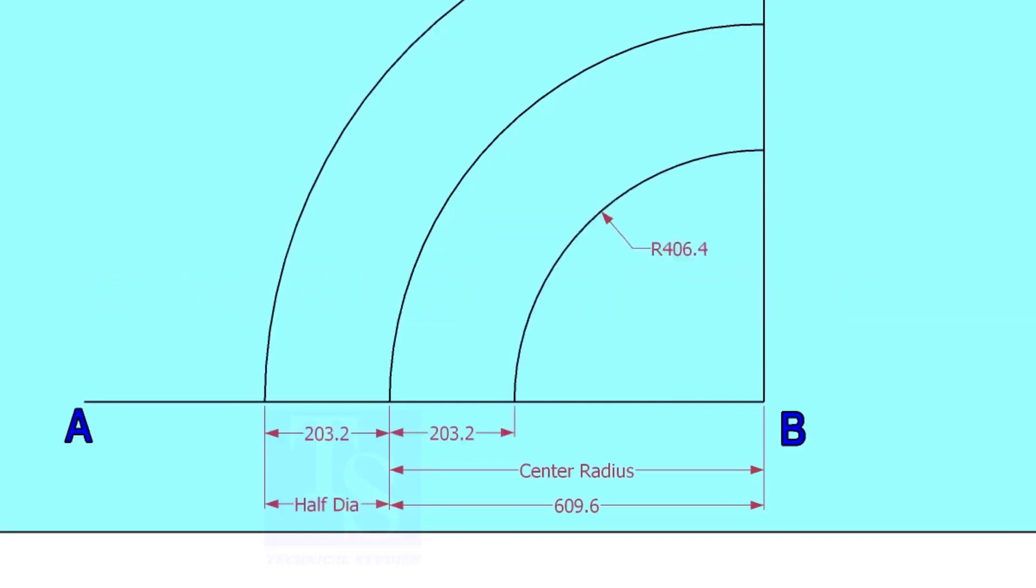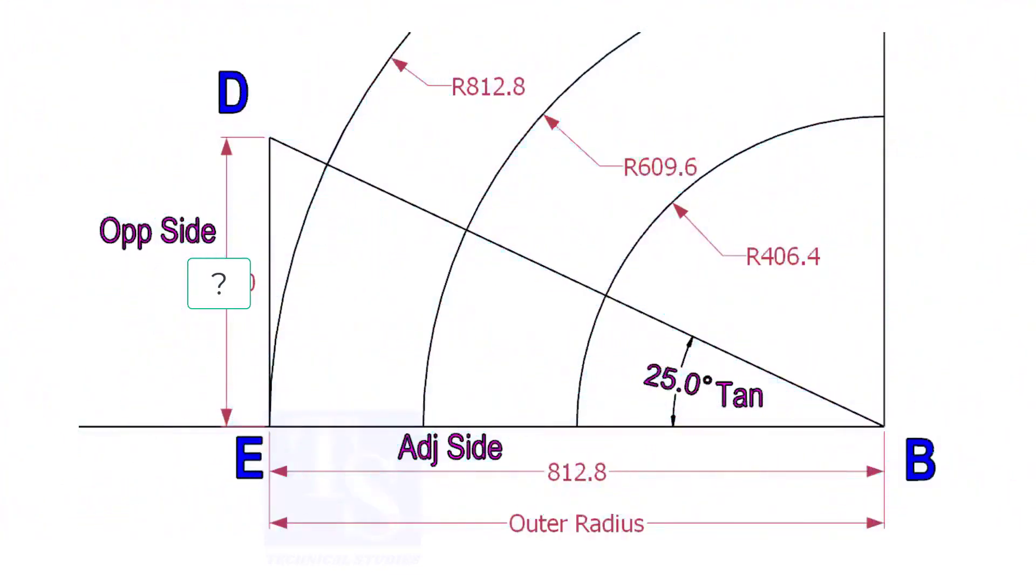Mark the half OD arcs on both sides of the center line. Mark a line 25-degree rotated from the baseline AB.